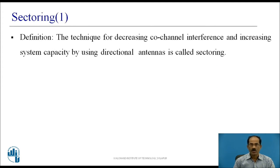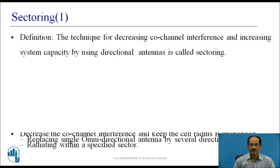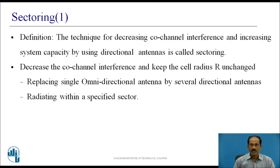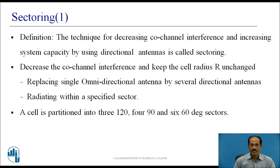Sectoring is the technique for decreasing co-channel interference while keeping the cell radius R unchanged, by replacing the single omni-directional antenna with several directional antennas radiating within a specified sector. The cell is normally partitioned into sectors — these could be 120-degree sectors giving 3 sectors per cell, 90-degree sectors giving 4, or 60-degree sectors giving 6.